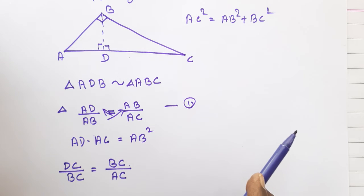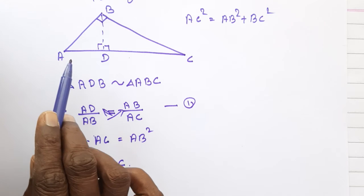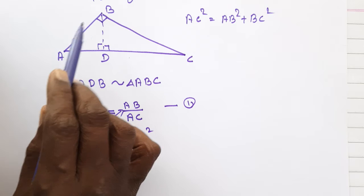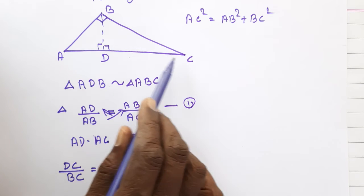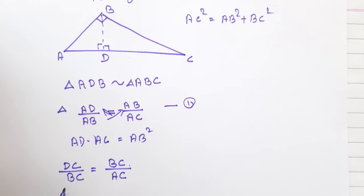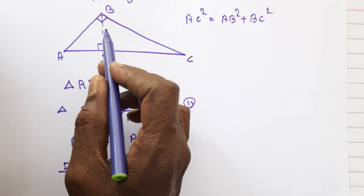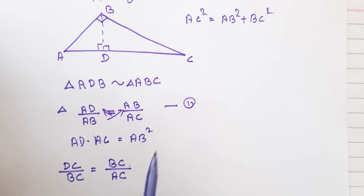Then AC, am I correct? Check DC in triangle BDC. Okay, adjacent of our triangle. Then here in triangle ABC, BC. BC is adjacent. DC by BC, okay.